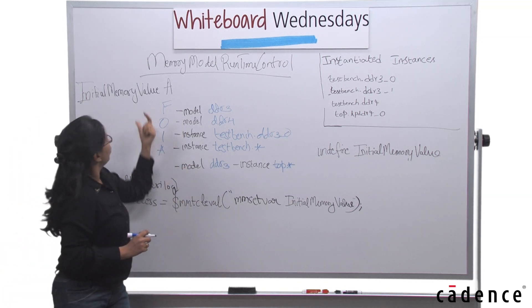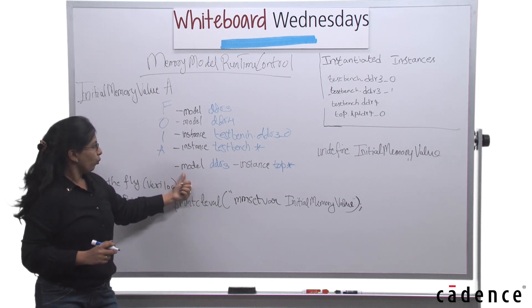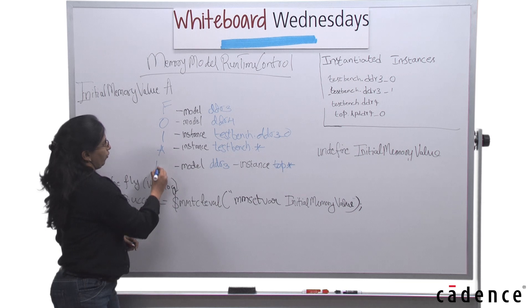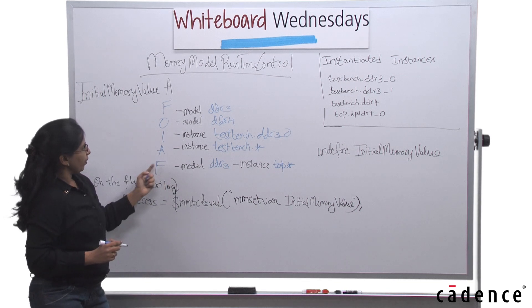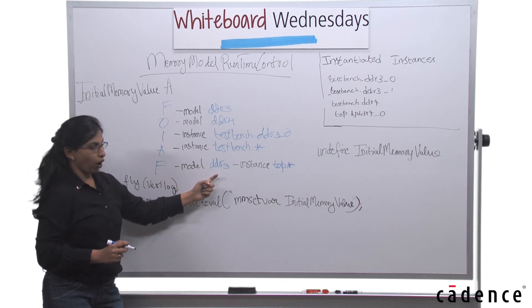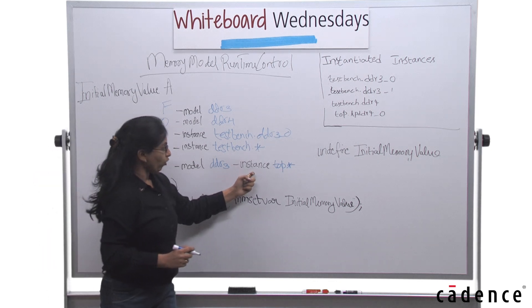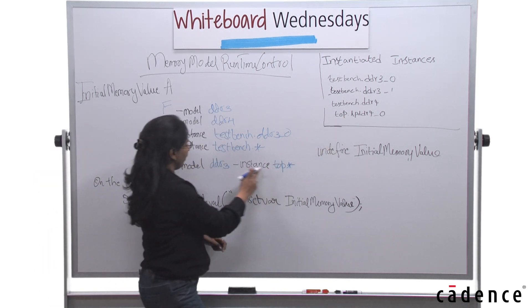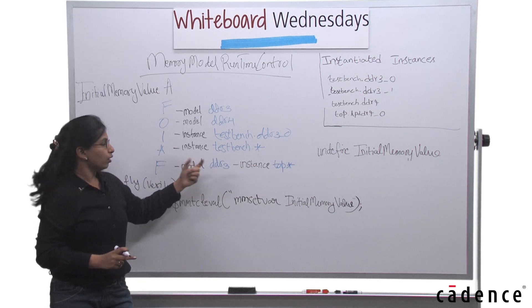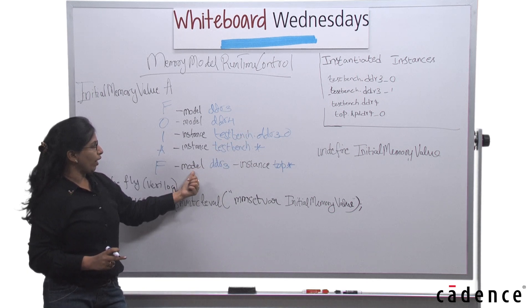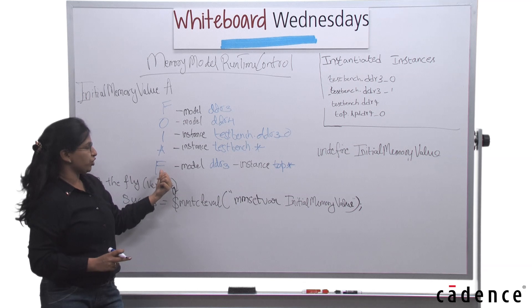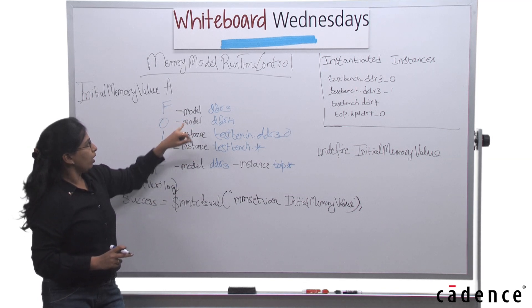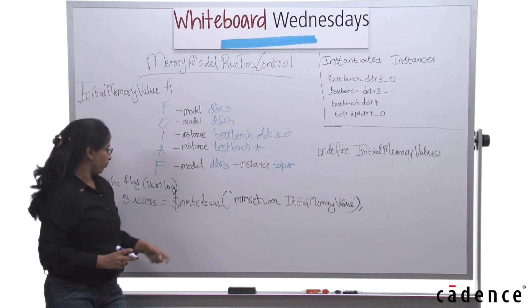Similarly, you can use initial memory value now with both coupled together. Here I'm saying F again. So initial memory value now becomes F for model ddr3, and also instance top star, which would mean that lpddr4 and ddr3. The instance lpddr4 and the model ddr3 now have the initial memory value as F.